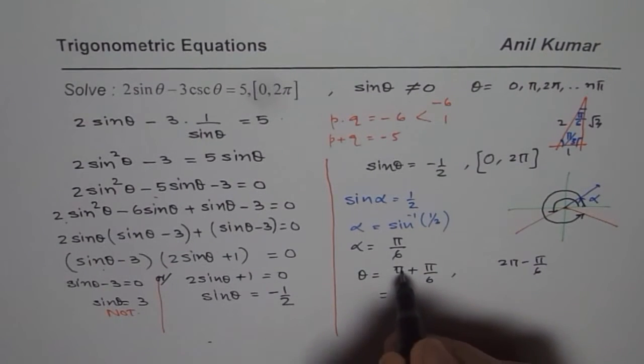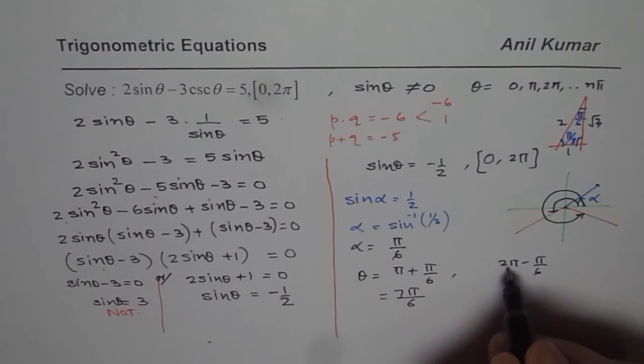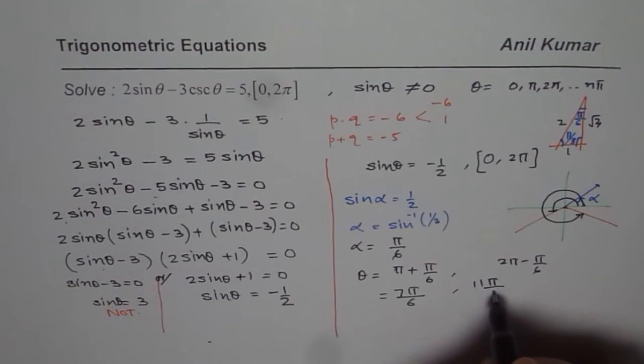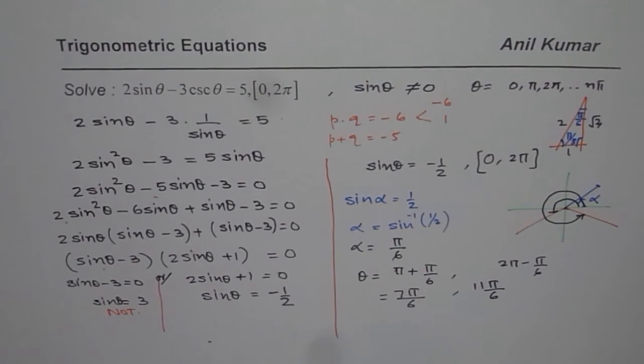You get the idea? So pi plus pi by 6 is 7 pi by 6, 6 plus 1. And here we have 12 minus 1 as 11 pi by 6. So these are the two solutions for the given equation in the domain 0 to 2 pi.